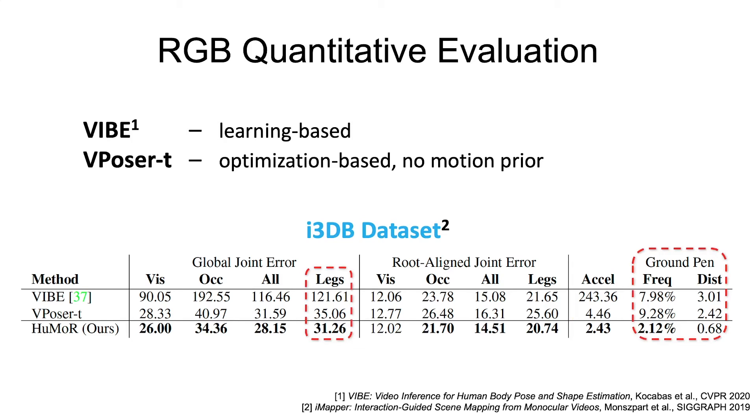Moreover, optimization without Humor struggles when legs are occluded, causing worse leg joint errors and frequent ground penetrations.